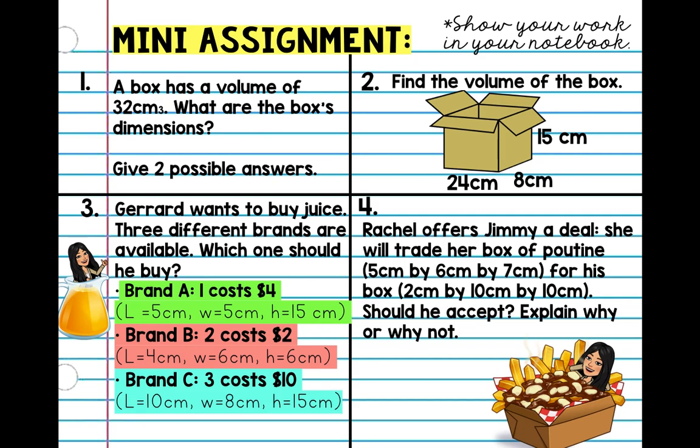Lastly, Rachel offers Jimmy a deal. She will trade her box of poutine, which is 5 by 6 by 7 centimeters, and his is 2 by 10 by 10. Should he accept the deal? Explain why or why not.